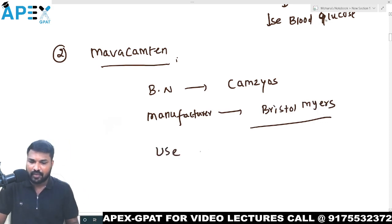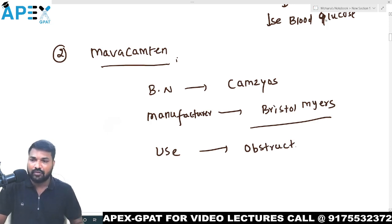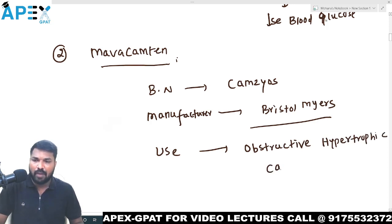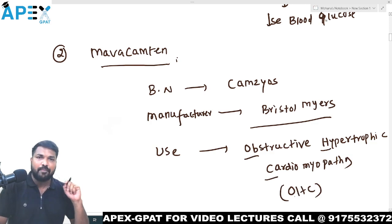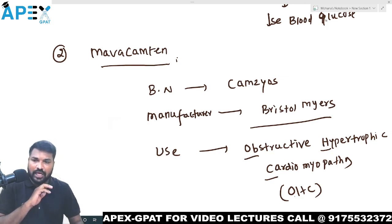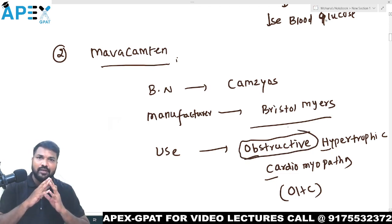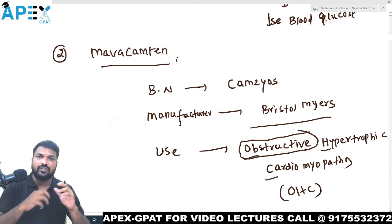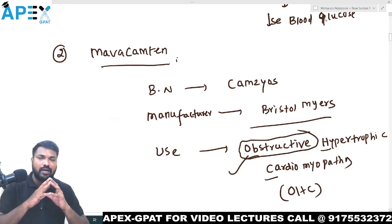Mavacamten is used for obstructive hypertrophic cardiomyopathy — simply OHC. In this condition, there is an obstruction in the cardiac muscle. When there is an obstruction, blood pumping is not going to occur in the heart, leading to obstructive hypertrophic cardiomyopathy.